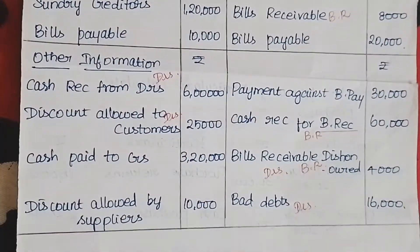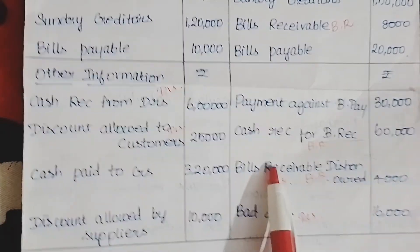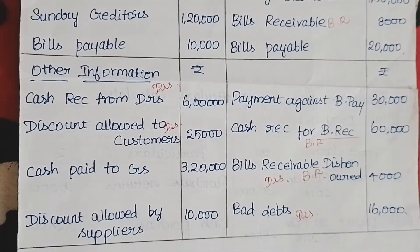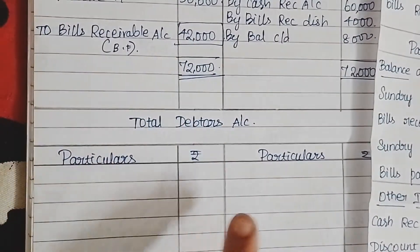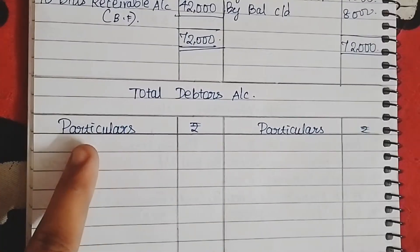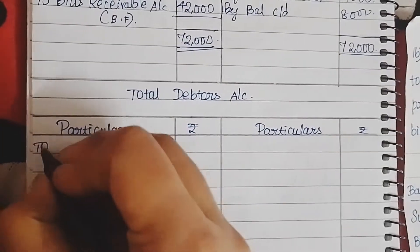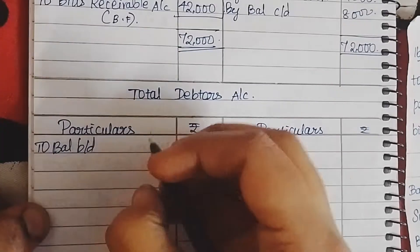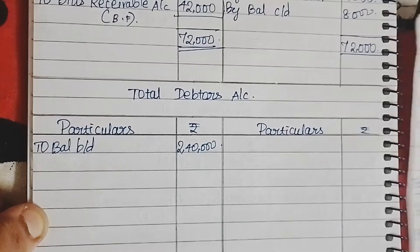So for total debtors format: opening balance, closing balance, cash received, discount allowed, bills receivable dishonored, bad debts — and importantly, the bills receivable account is 42,000. Now total debtors — let's start. What is the opening balance of the total debtors account? 2,40,000. To balance brought down — opening balance is 2,40,000.